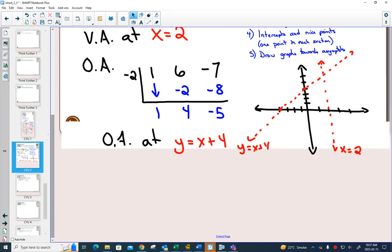There's only two sections. The sections are when x is less than 2, and when x is bigger than 2. Your vertical asymptote splits up your domain into two sections. So we need to find all of our intercepts. Again, the y-intercept is the easiest.